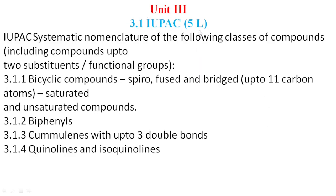Unit 3. 3.1: IUPAC — 5 lectures. IUPAC systematic nomenclature of the following classes of compounds, including compounds up to 2 substituents or functional groups. 3.1.1: Bicyclic compounds — spiro, fused, and bridged — up to 11 carbon atoms, saturated and unsaturated. 3.1.2: Biphenyls. 3.1.3: Cumulenes with up to 3 double bonds. 3.1.4: Quinolines and isoquinolines.